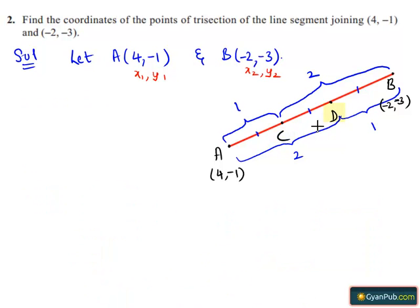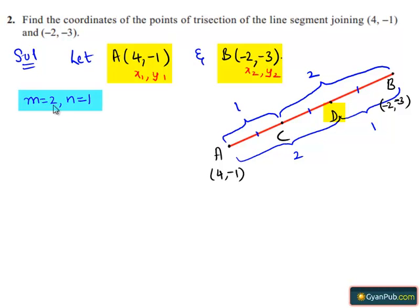Point D divides AB in the ratio 2:1 internally, so now we take M = 2 and N = 1. Substituting M, N, x1, y1, x2, y2 in the section formula, we get the coordinates of D.